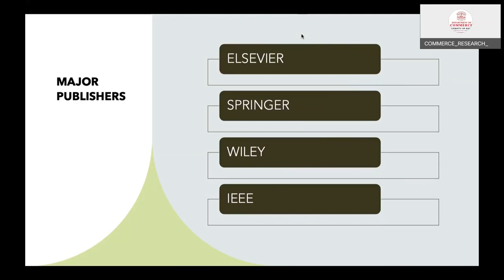The impact factor and indexation in Scopus and Web of Science is very important, or it should be in the ABDC list. The major publishers in the world are Elsevier, Springer, Wiley, IEEE, and Taylor and Francis. You can focus on these publishers, but it will take time — you need to send a quality manuscript, otherwise these publishers won't accept it.